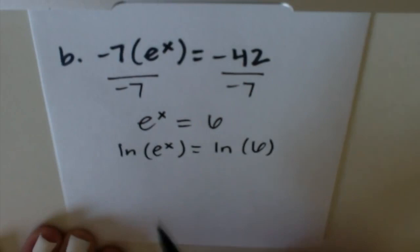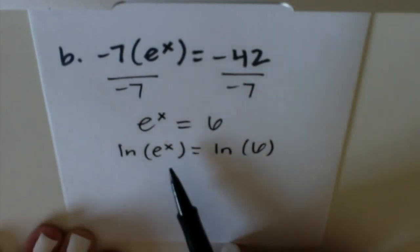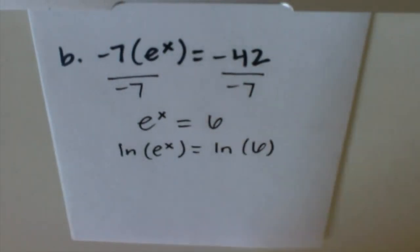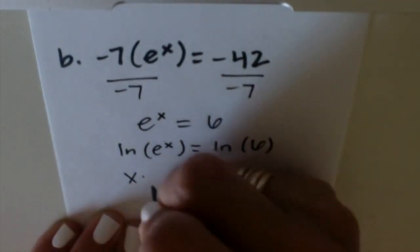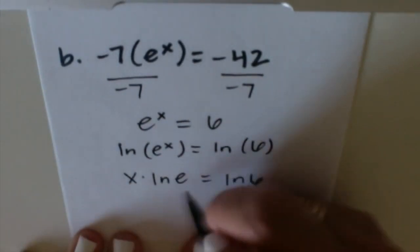Because your variable is in the exponent, we're going to take the natural log of both sides. So we're going to use properties of exponents that says we can take this x and move it to the front. And again, ln(e) = 1.